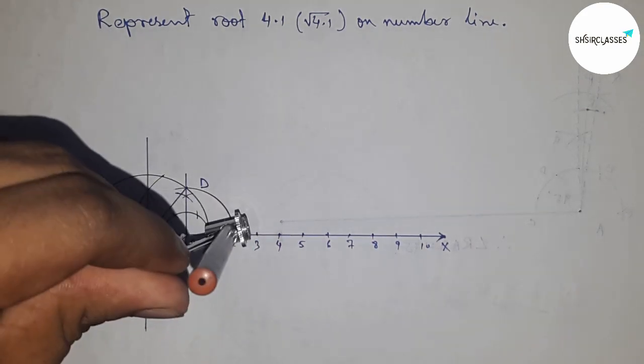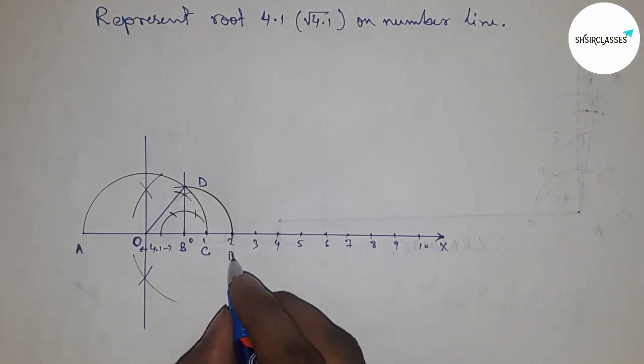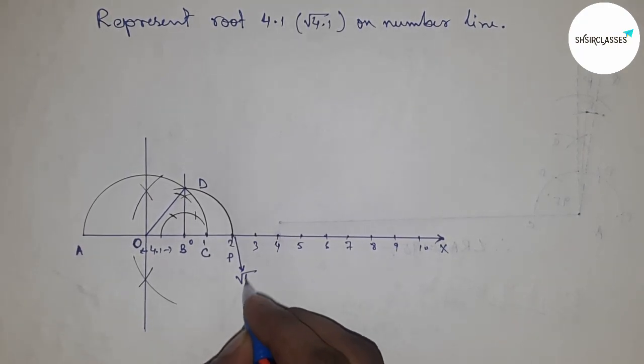This is the representation of root 4.1 on the number line.